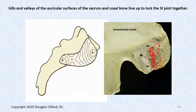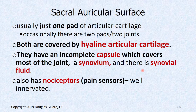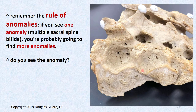There's no capsule posteriorly here either, but the capsule comes down in front, making this a very unusual type of joint.